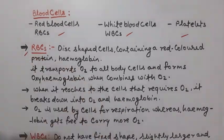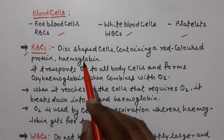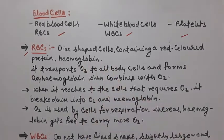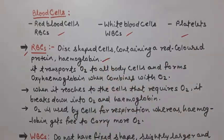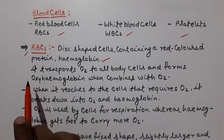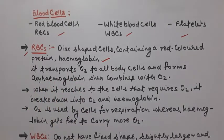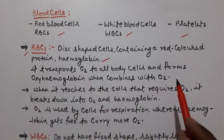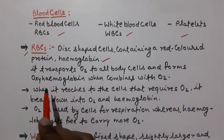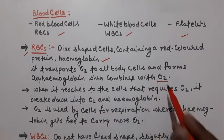First of all, about RBCs — these are disc-shaped cells. They contain a red-colored protein known as hemoglobin. It transports oxygen to all body cells and forms oxyhemoglobin when it combines with oxygen.